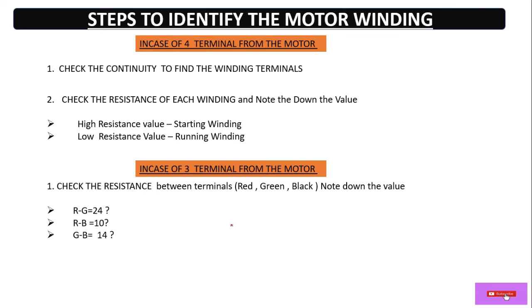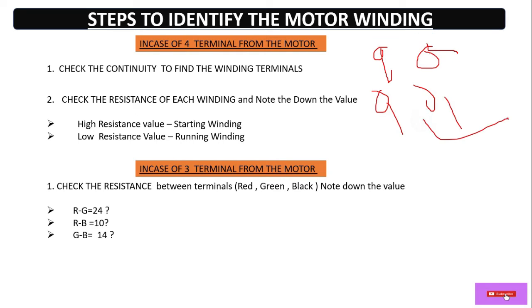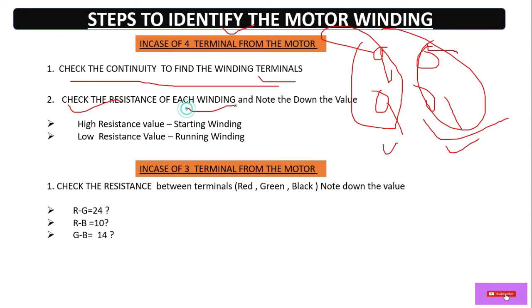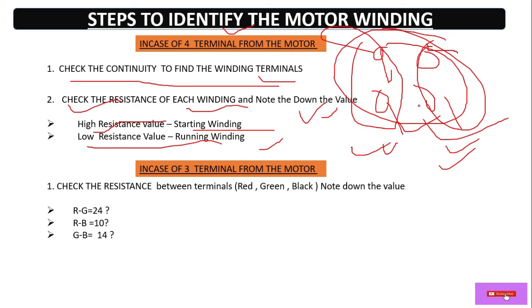To identify the terminals or winding of the motor we have to follow these steps. In the case of four terminals taken out from the motor, first we have to check the continuity to find the winding terminals, then we have to check the resistance of each winding and note down the values. According to the resistance value we can identify the winding — high resistance value is the starting winding and low resistance value is the running winding.